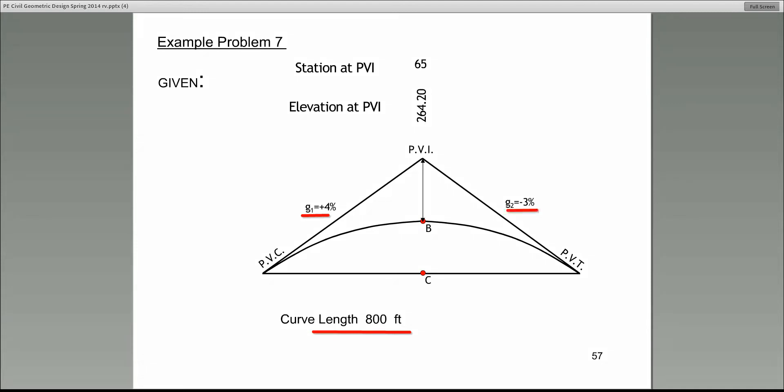Now, what about G2? Gradient of the forward tangent is minus 3. So this has a negative slope. For every 100 foot of horizontal, drops 3 units. What else do we know? The station of the PVI is 65. The station of the PVI is 65. Then they give you the elevation of PVI also. So think about what we have. We know the station of the PVI and the elevation at PVI.